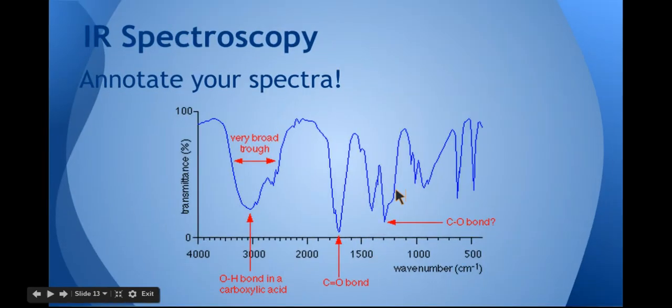Infrared spectroscopy: it's always a good idea to annotate your spectra. So you could quite easily put on OH bond of a carboxylic acid in this case, C=O, C-O, and so on.